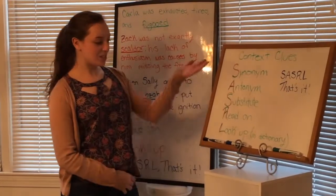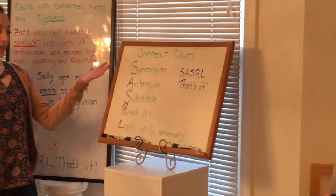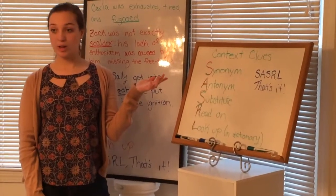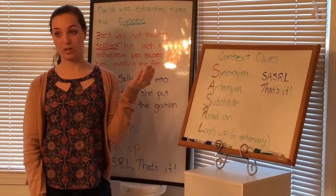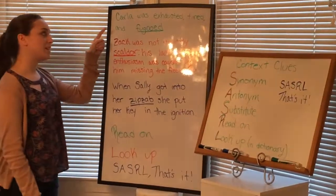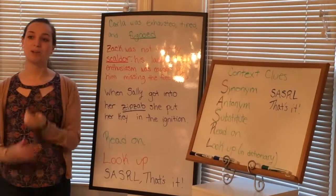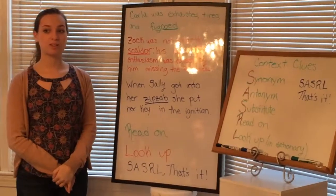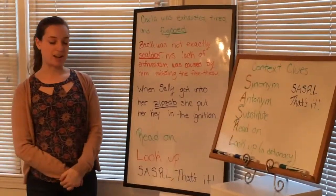So these are the steps to using context clues. The first one is the synonym step. This is when you find other words in the sentence that you do know that would help explain or be synonymous with the word that you don't know. For example, in this sentence, Carla was exhausted, tired, and fagood. Mom, how would you figure out what fagood was? Well, it would probably be something parallel to exhausted and tired. Right. Something synonymous with exhausted or tired? Yep, exactly right.